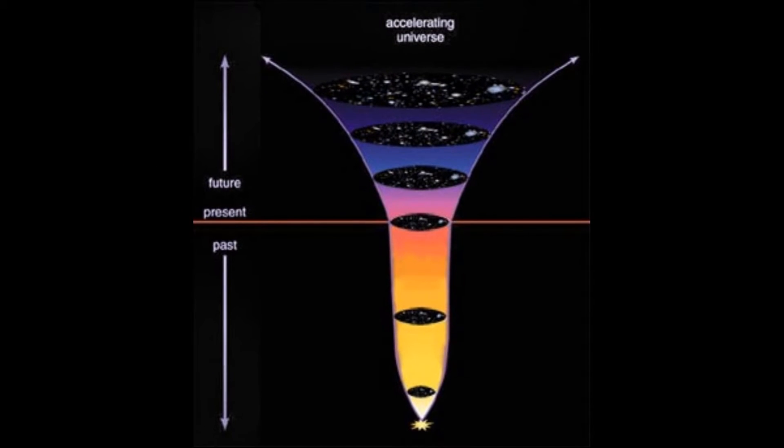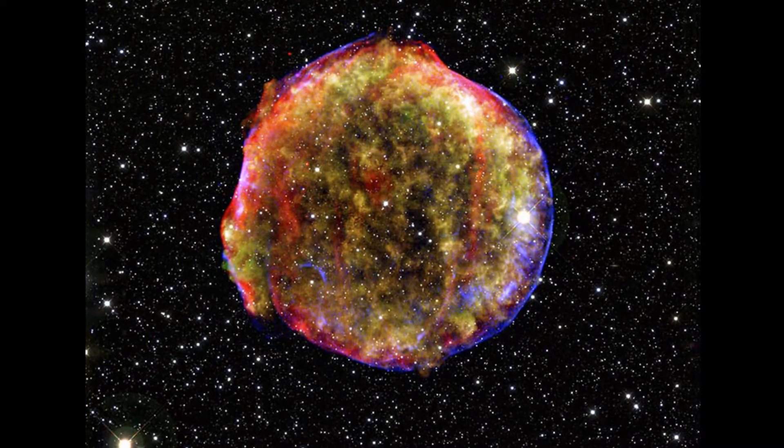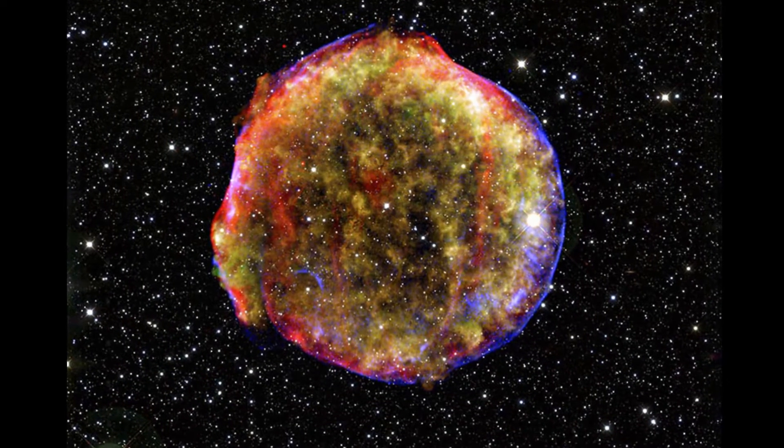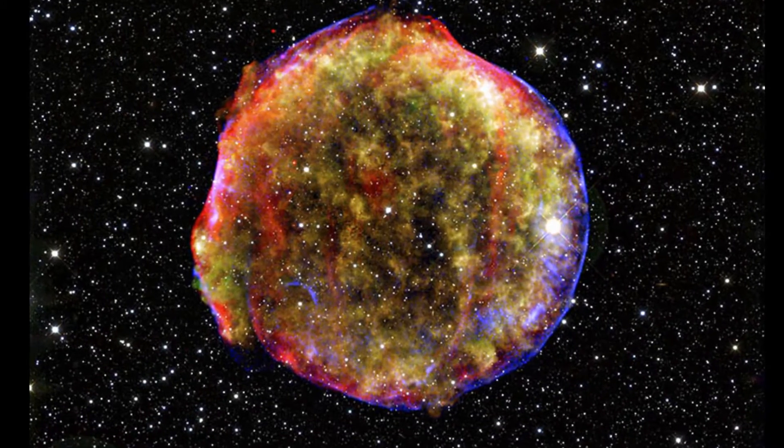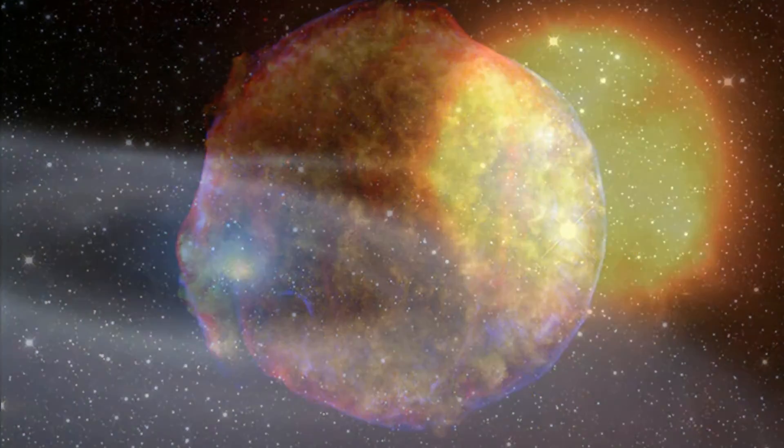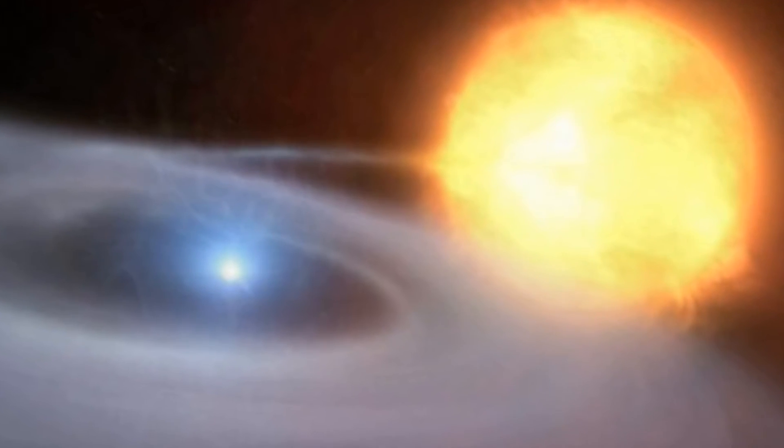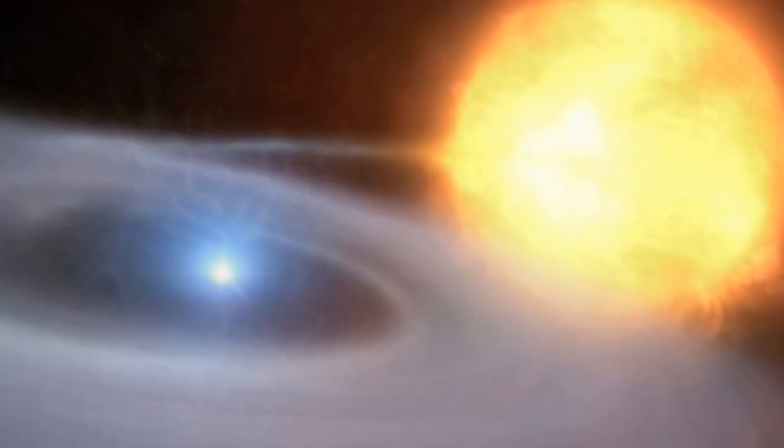It is generally accepted that supernovae involve the thermonuclear explosion of a carbon-oxygen white dwarf, but the basic details of this picture, such as the nature of the binary companion and the sequence of events leading up to the supernova explosion, are still hotly debated. A popular model for the progenitor system, known as the single degenerate scenario, is illustrated here.